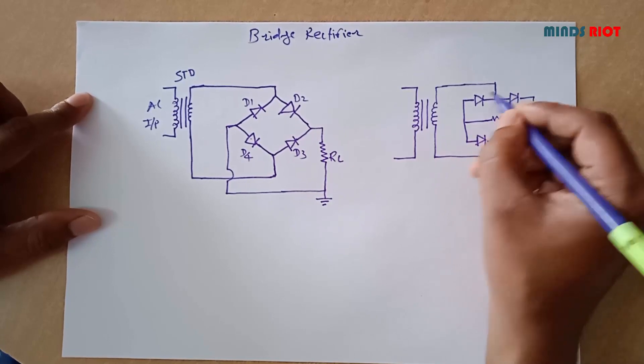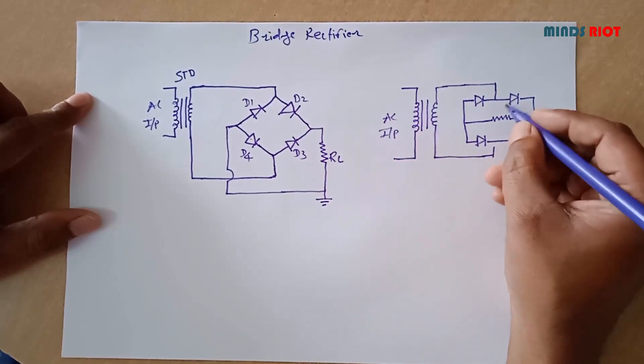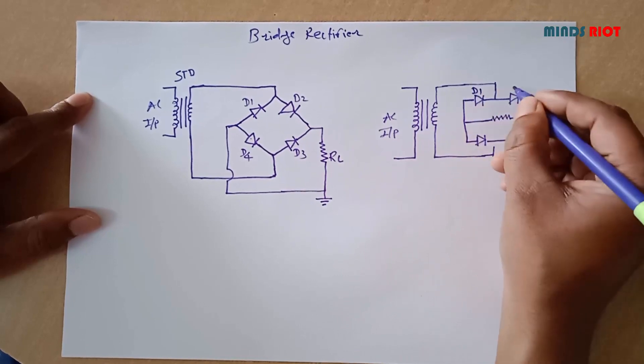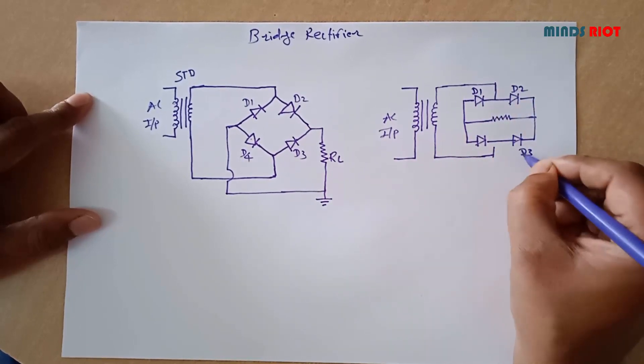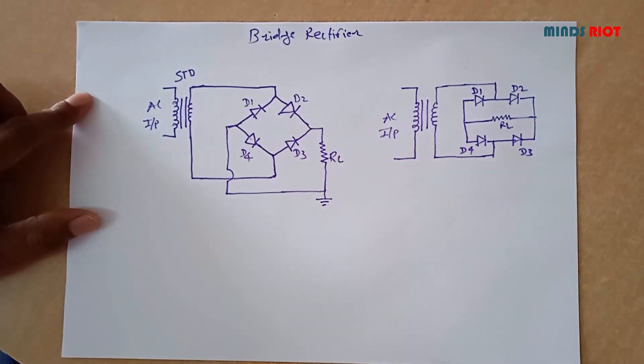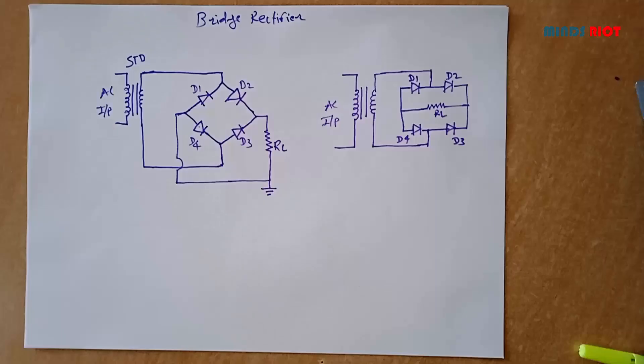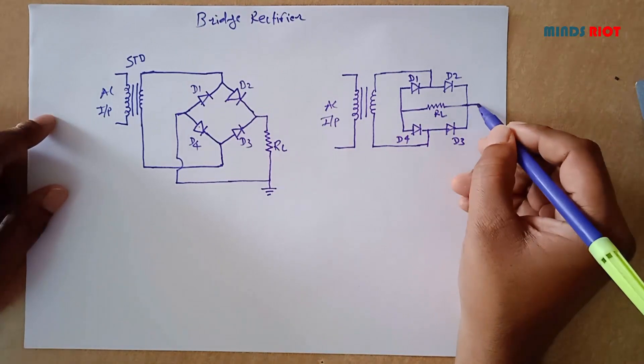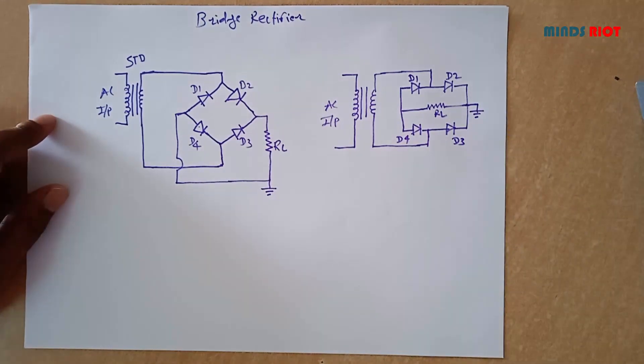Load resistor RL, AC input, diodes D1, D2, D3, and D4, load resistor RL, and ground.